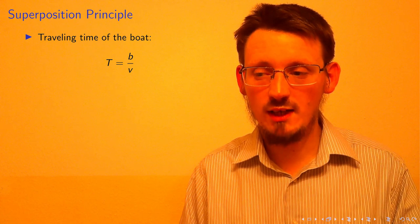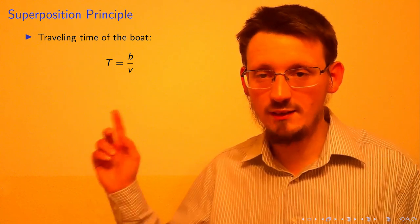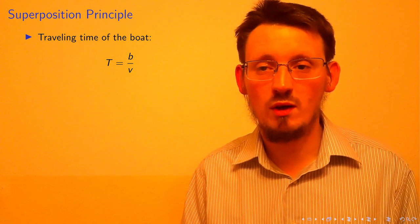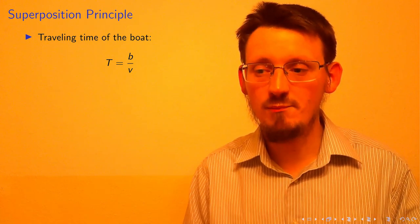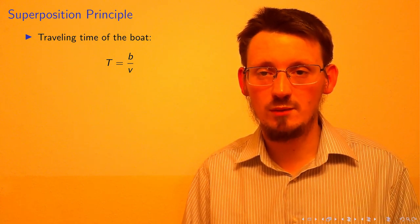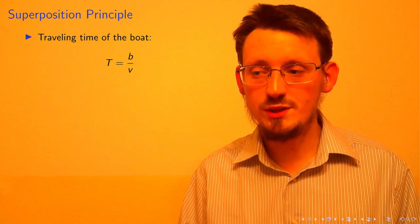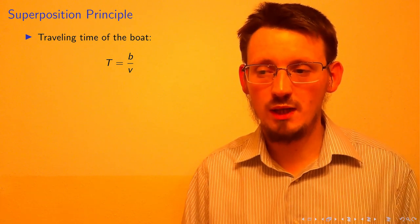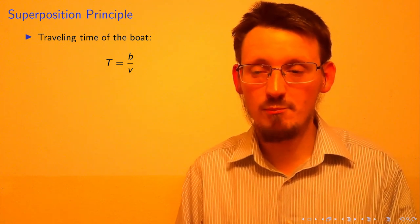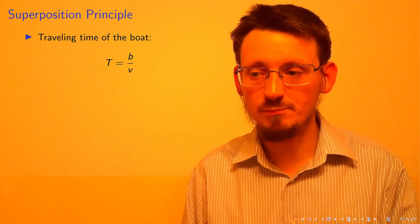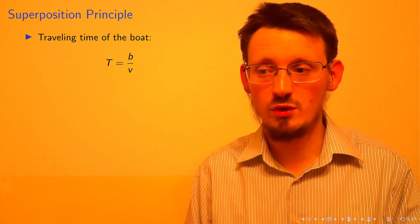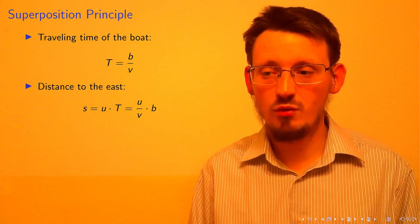First, we calculate the traveling time of the boat that I denoted here with a capital T and this equals to B over V. I have used the capital letter T in order to emphasize on the fact that we really used the description of a certain time interval. We could now insert basically the values of B and V in order to get a number for T, but let me introduce a little bit better and more elegant way to solve this.